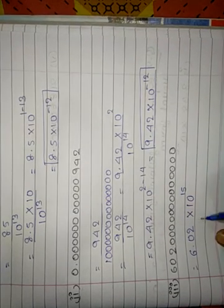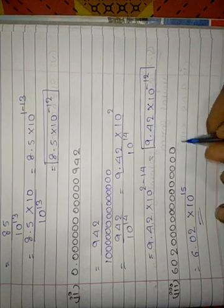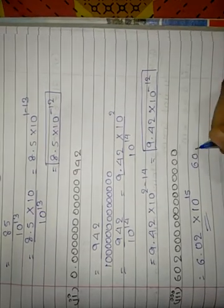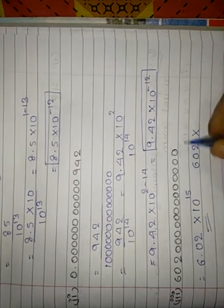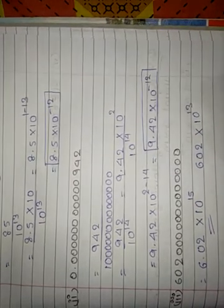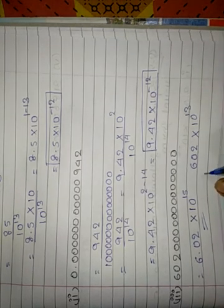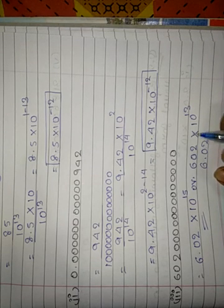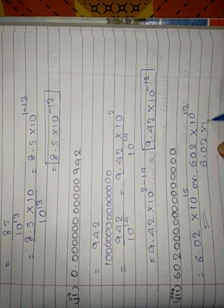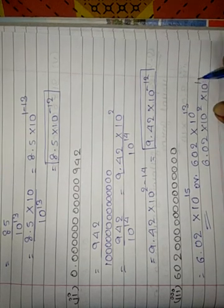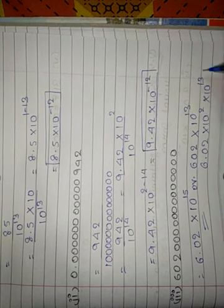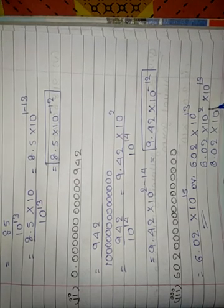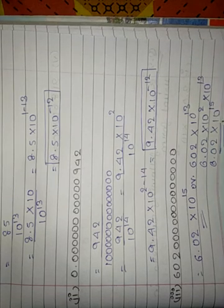Alternatively, using the step method: separate the zeros as 602 × 10 raised to 13, then bring 602 between 1 and 10 to get 6.02 × 10 squared. Since both are in multiplication, we add the exponents: 6.02 × 10 raised to (2 + 13) = 6.02 × 10 raised to 15.